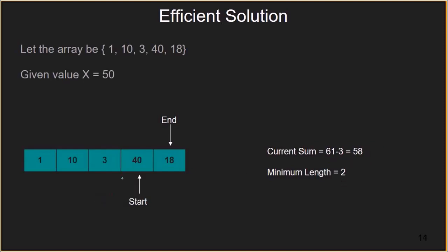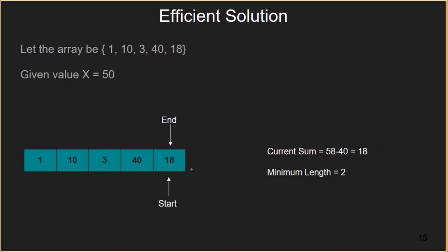As the sum has become greater than 50, we move the start pointer to element 40. The current sum becomes 58, which is still greater than 50. So minimum length is updated to 2. As current sum is still greater than 50, we move the start pointer further right. The current sum becomes 18, which is smaller than 50, so minimum length remains 2. Finally, as there are no further elements in the array, we have the answer as 2.